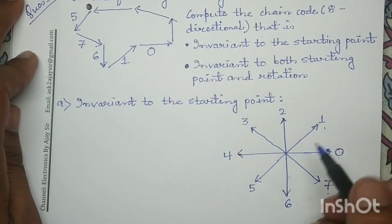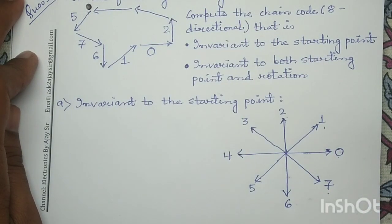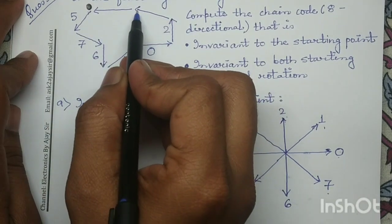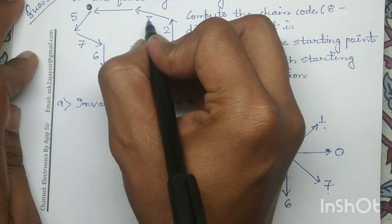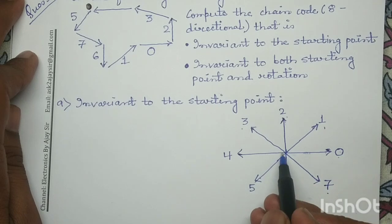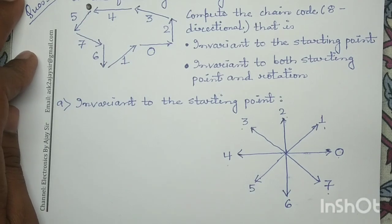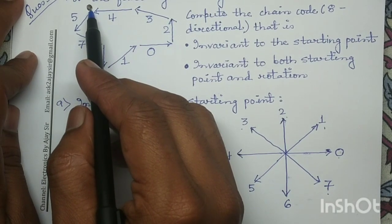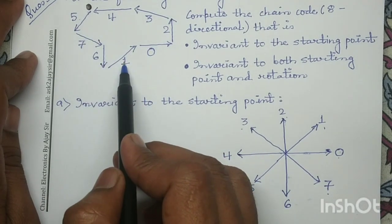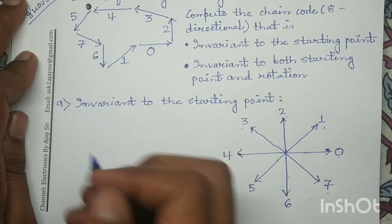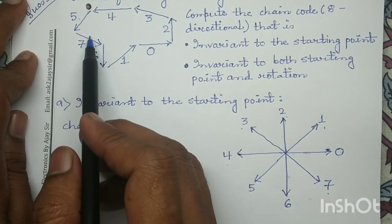This upward direction in eight-directional code is assigned with directional code two, so I will write here two. Next, this inclined direction is assigned with directional code three, so I will write here three. And this reverse direction is assigned with directional code four, so I will write here four. Since this is my starting point, this is my origin, the eight-directional chain code for this boundary becomes 5 7 6 1 0 2 3 4.